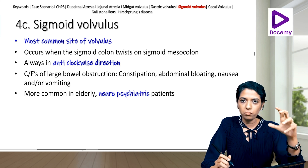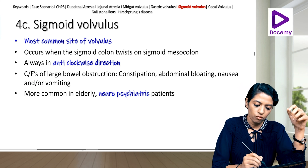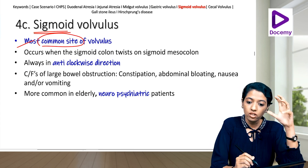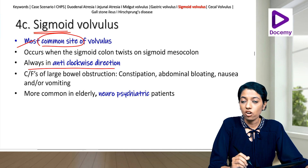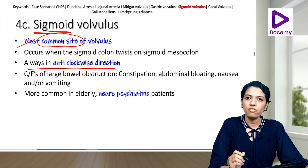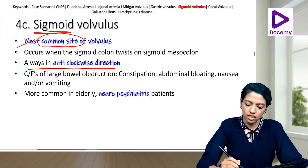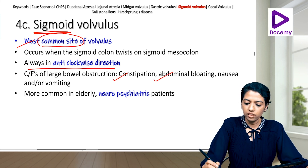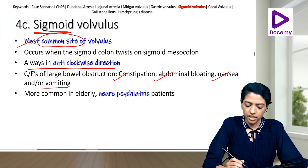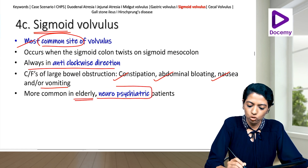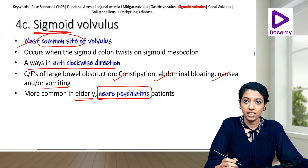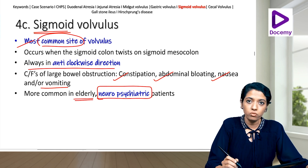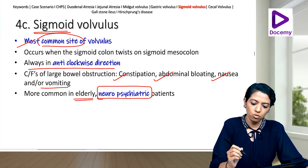Sigmoid volvulus is the most common site of volvulus. It occurs when the sigmoid colon twists on its sigmoid mesocolon, always in an anticlockwise direction. It presents with large bowel obstruction features — constipation, abdominal bloating, nausea and vomiting — and is commonly seen in elderly neuropsychiatric patients.